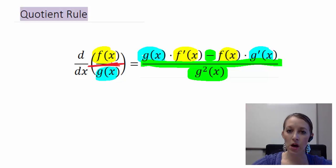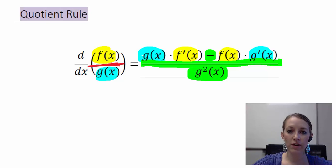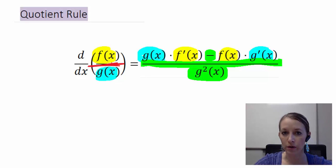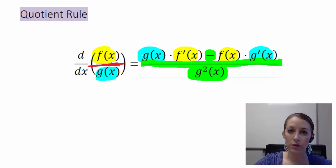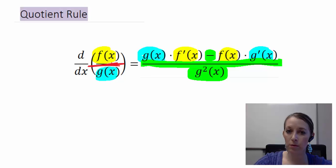There is a simple song to help you memorize this. Anytime we reference the numerator, we call it 'high,' and anytime we reference the denominator, we call it 'low.' The song goes: low d high, minus high d low, all over low squared. So 'low d high' means the original of the low times the derivative of the high; minus 'high d low' means the original of the high times the derivative of the low; all over the low squared. Hopefully that helps you memorize the quotient rule.